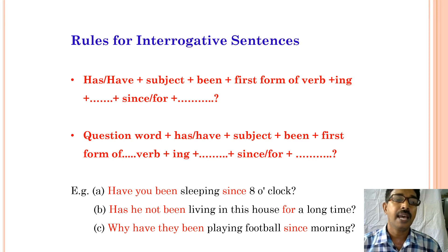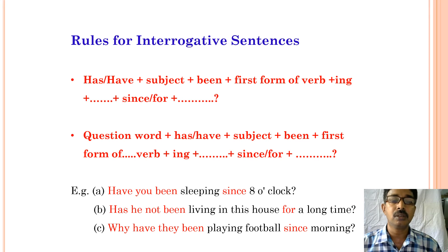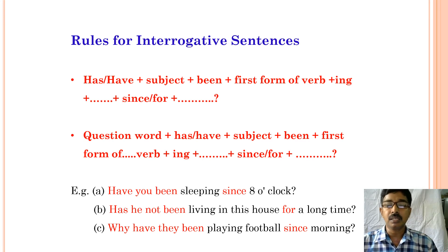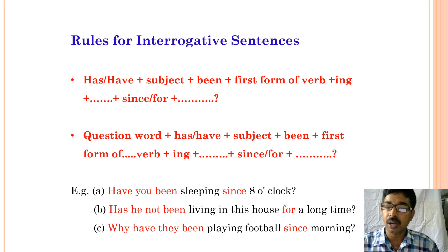Now let us see the rules for framing interrogative sentences in present perfect continuous tense. The structure is: has or have plus subject plus been plus first form of the verb plus -ing plus since or for plus object. Or question word plus has or have plus subject plus been plus first form plus -ing plus since or for plus object. Examples: have you been sleeping since 8 o'clock? Has she not been living in this house for a long time? Why have they been playing football since morning?